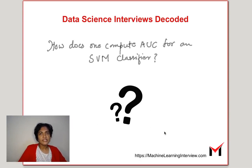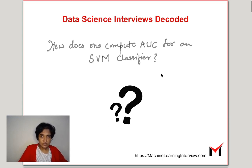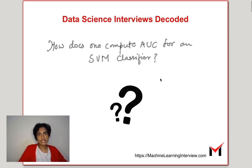How does one compute AUC for an SVM classifier? This is an interesting problem because AUC is typically computed for classifiers that give us a distribution over the classes as an outcome, and not just the absolute class values.